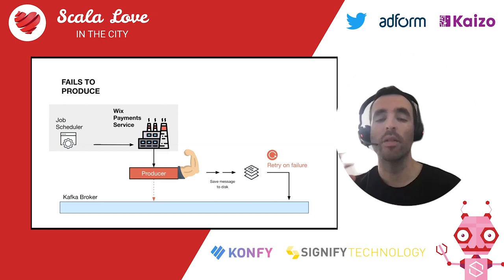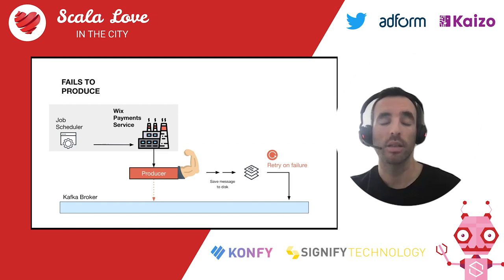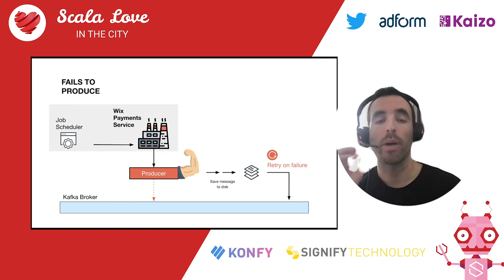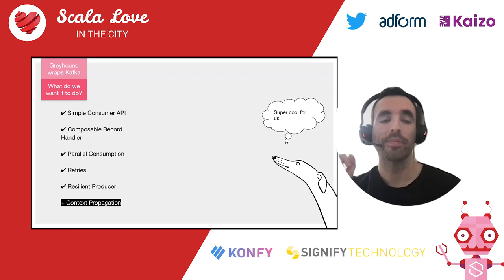With Kubernetes deployments, the service is detached from disk. So if the pod goes down but messages are still accumulated on disk, we have a dedicated Kubernetes daemon that notices the pod is down and takes on the responsibility of producing those messages to Kafka itself — ensuring no message is ever lost.